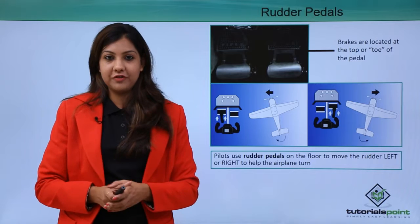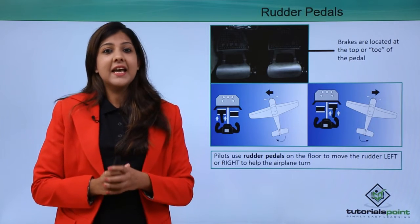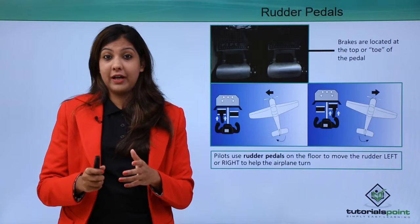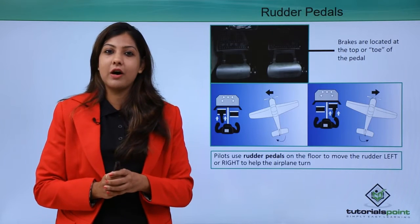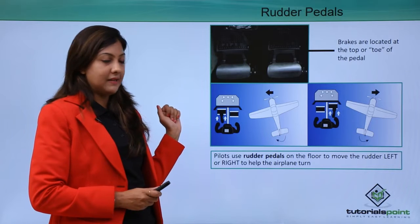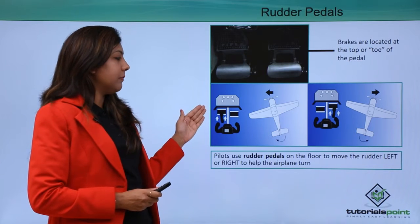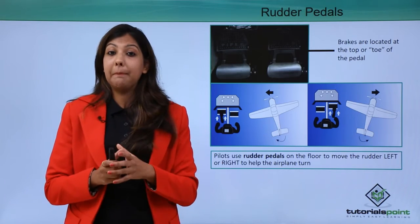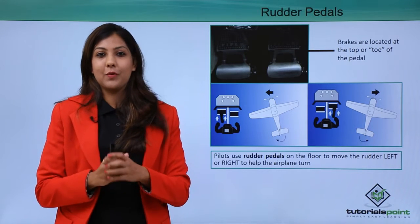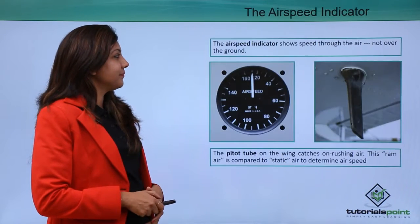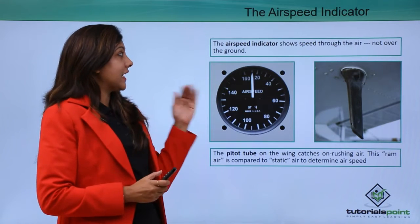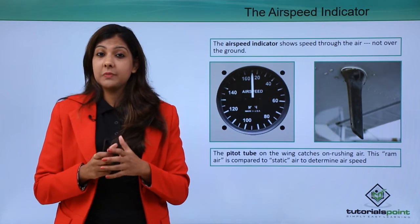Now let's talk about rudder pedals. These are located at the foot of where the pilot is sitting. To apply the brakes and stop the aircraft, there are brakes at the toe of the pedals which help the aircraft come to a complete stop. Pilots use these when they want to brake.